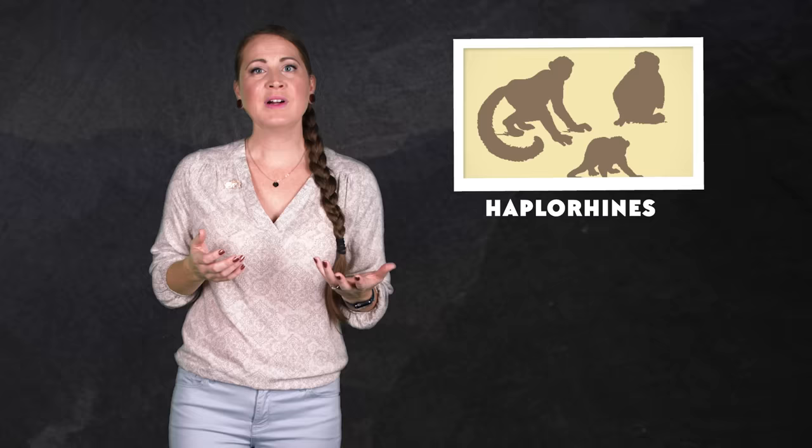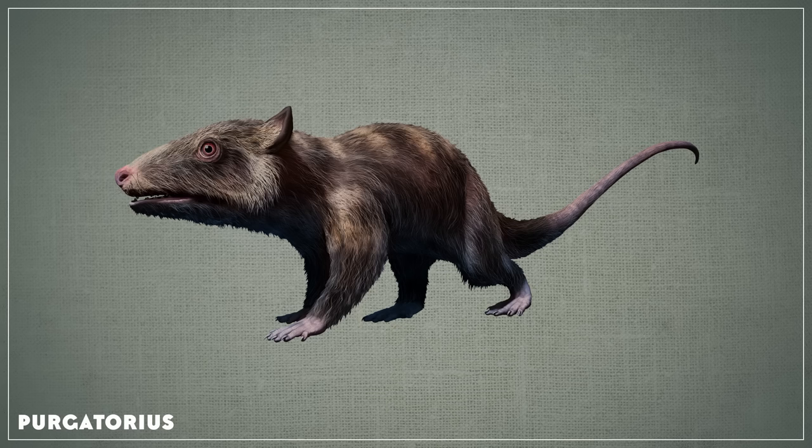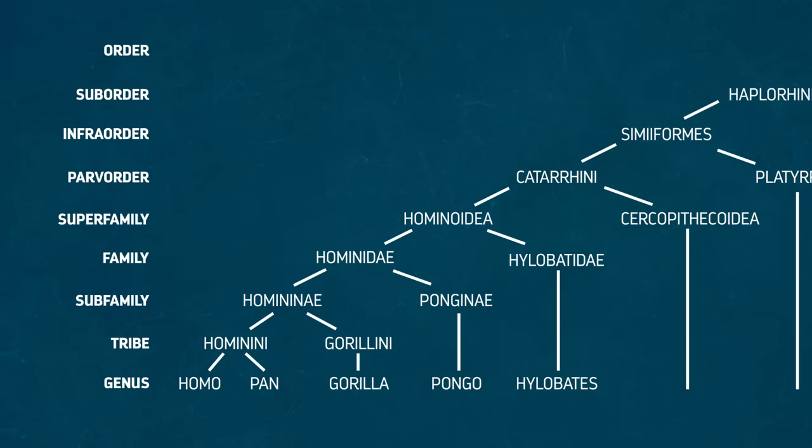The ancestor of all Haplorhines was probably small, arboreal, and active during the day. And it might have eaten both insects and fruit. So it may have been more like Purgatorius than anything we've encountered so far.